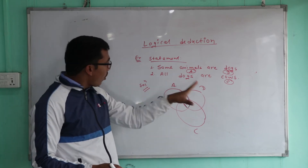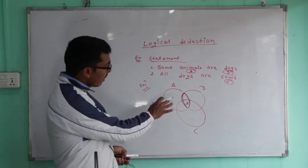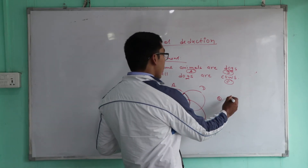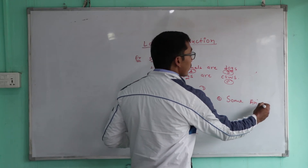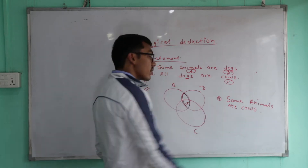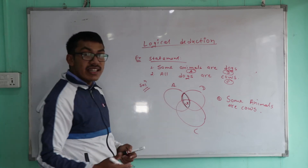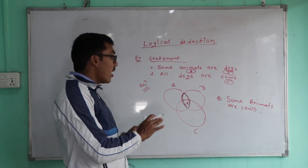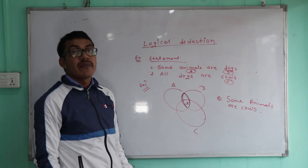So if we look at the conclusion, the conclusion is correct. Some animals are cows — this conclusion follows from the two statements using the Venn diagram analysis.